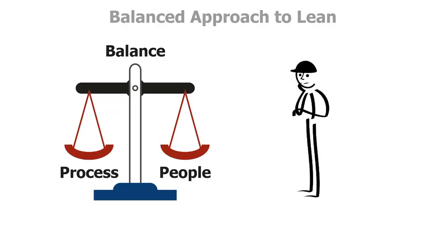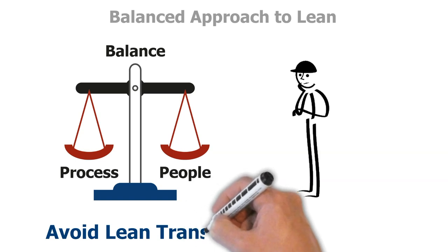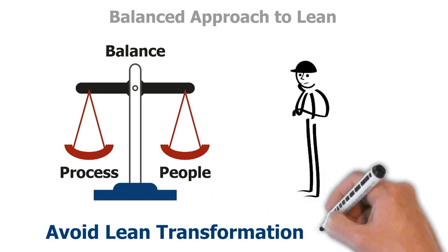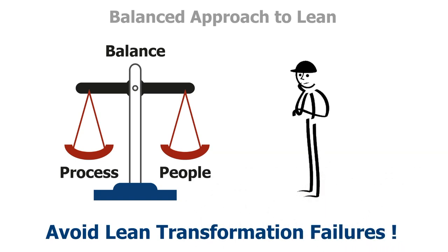Applying the LTF helps you avoid lean transformation failures by ensuring a balanced approach to the five critical dimensions. For example, if you put too much focus on process improvement through top-down lean tool applications or projects that are done to people by experts, then this approach will often disengage people from owning or sustaining any improvements made to the work.